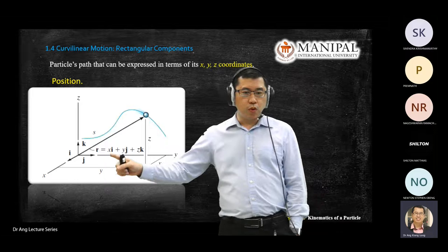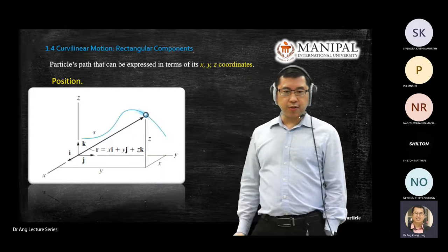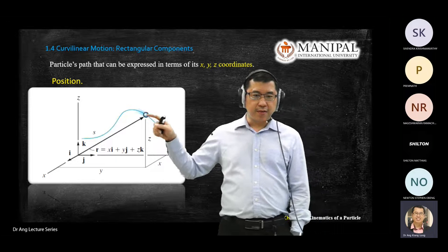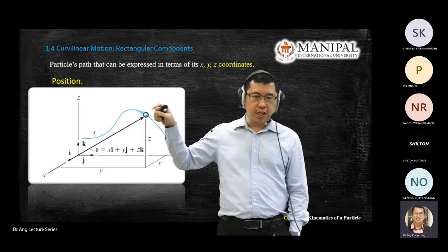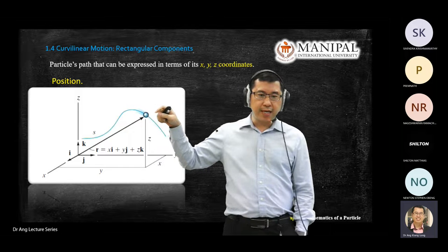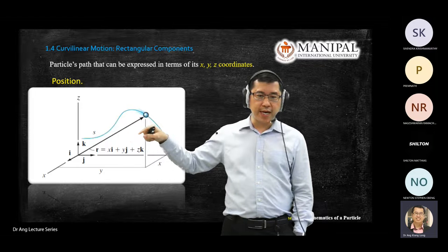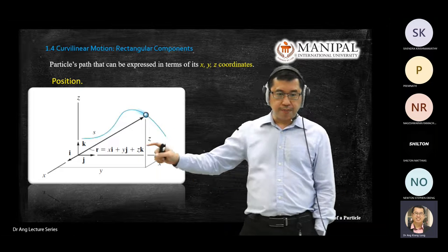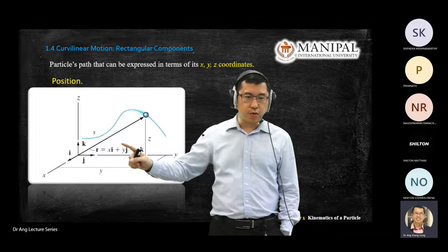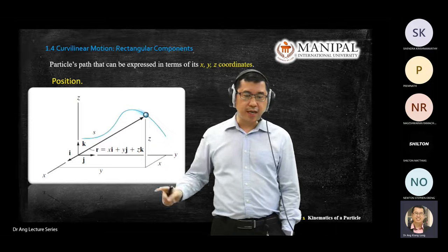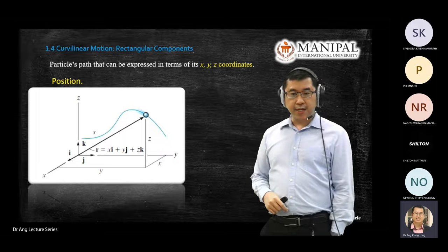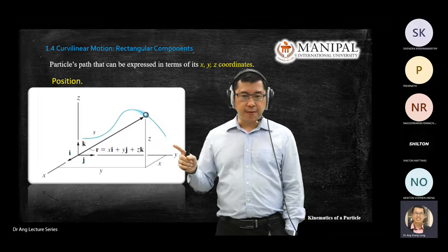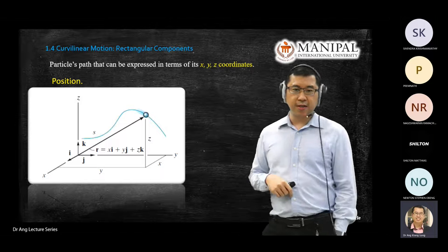To locate the particles inside this three-dimensional coordinate system, we can define the position of this particle at any time by combining the three dimensions of x, y, and z. Your displacement is a vector form, so your r vector equals xi plus yj plus zk. You may have learned this in your mathematics class when studying vectors, and now you apply it in the engineering dynamics context.